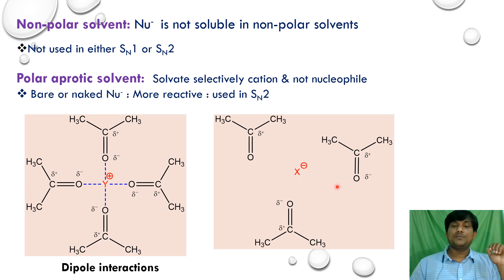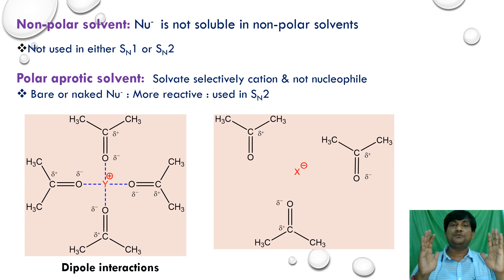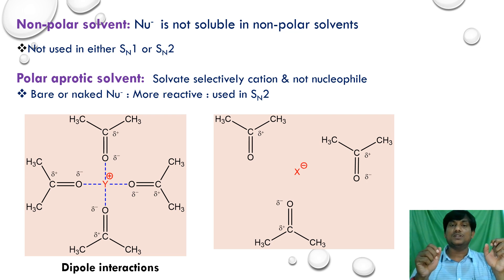Even though the solvent has a partial positive charge on carbon, there is no interaction because the oxygen has lone pair electrons, causing repulsion between X− and the partial negative charge on oxygen. Therefore, in polar aprotic solvents, the cation is stabilized but the nucleophile is not solvated — it is a free or 'naked' nucleophile that can easily attack the electrophilic reaction center. This makes polar aprotic solvents suitable for SN2 reactions.